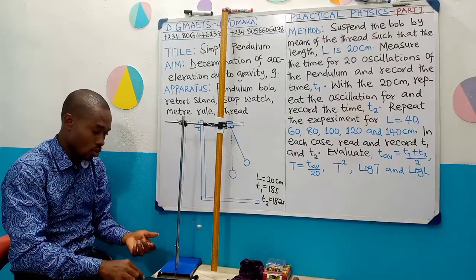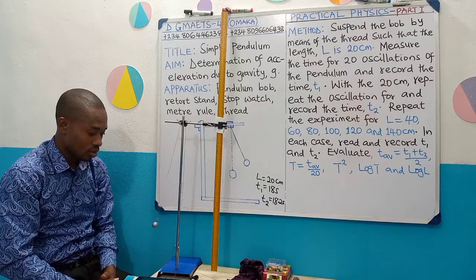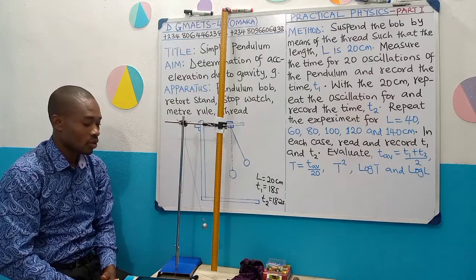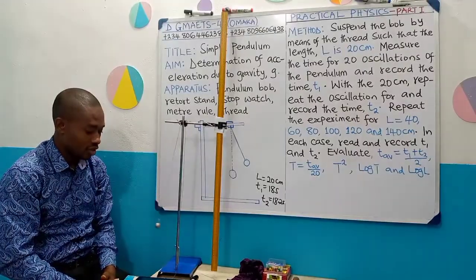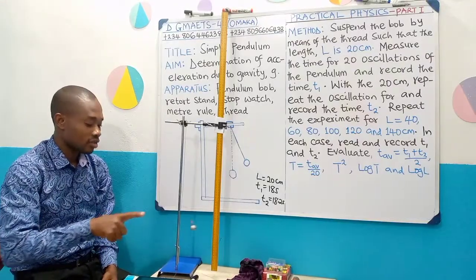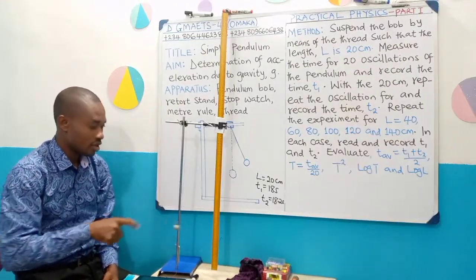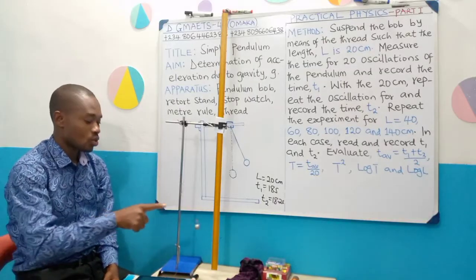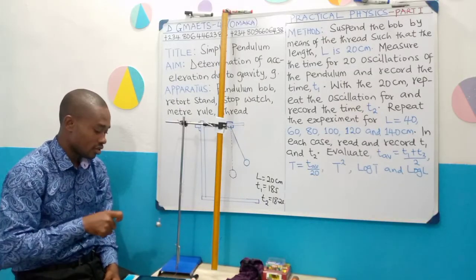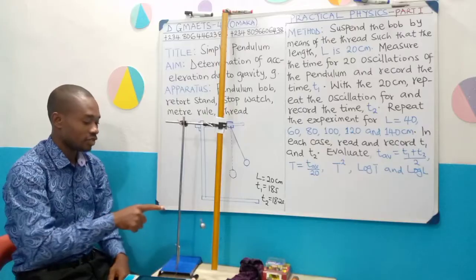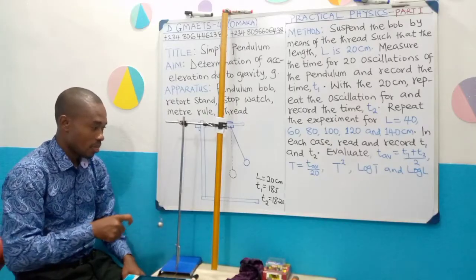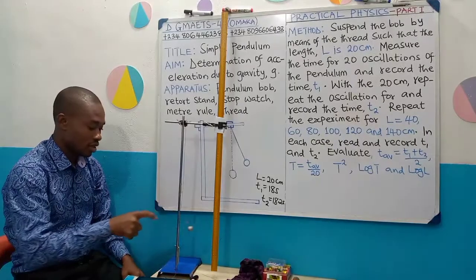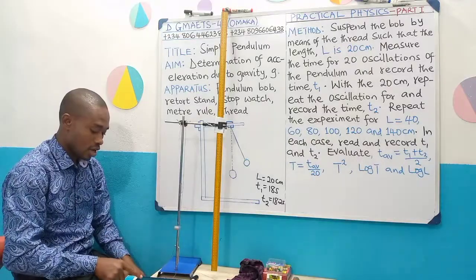Let's watch what happens here for 40 cm. I've displaced through small angle, I am now ready. Remember, length is 40 cm now. So we go 1, 2, 3, 4, 5, 6, 7, 8, 9, 10, 11, 12, 13, 14, 15, 16, 17, 18, 19, and 20.